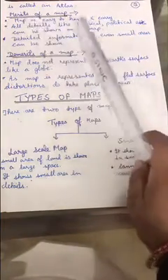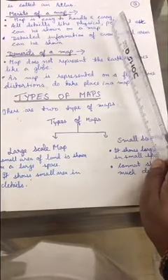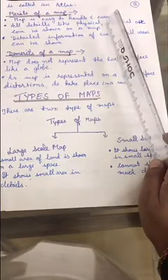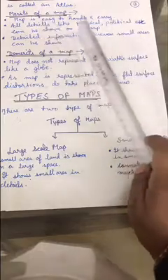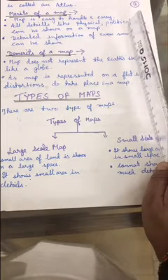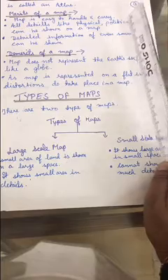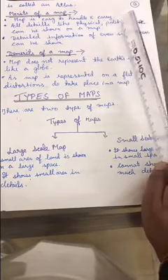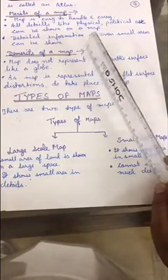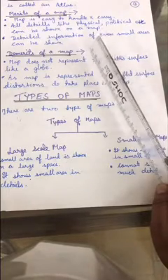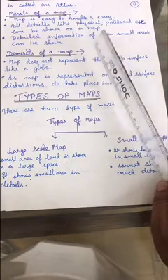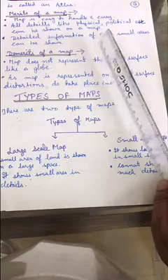Merits of maps: Map is easy to handle and carry as it can be rolled and even can be folded. Because of its light weight, it is very easy to carry. All details like physical features, political features and even the climatic type, vegetation of a certain area, soil, and agricultural land can be shown on a map. Detail information of even small areas can be shown. Elaborate information of even small areas can be shown on a map - like a topographical map can show all man-made features and natural features of that particular area.